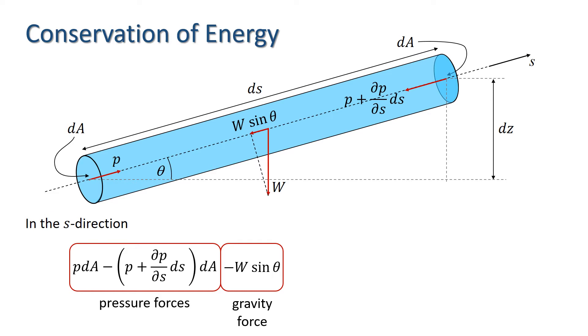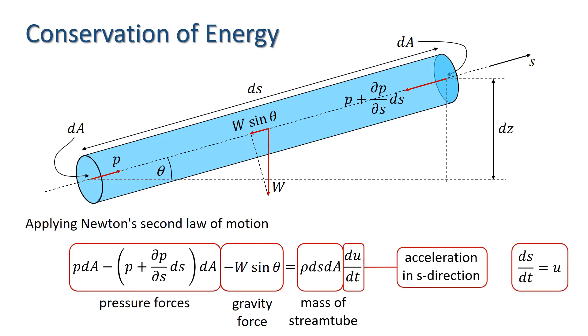Now we apply Newton's second law of motion, which states that force equals mass times acceleration. We have already worked out the sum of the forces here, so we equate that to rho dS dA times dU/dT, where U is the velocity in the S direction.